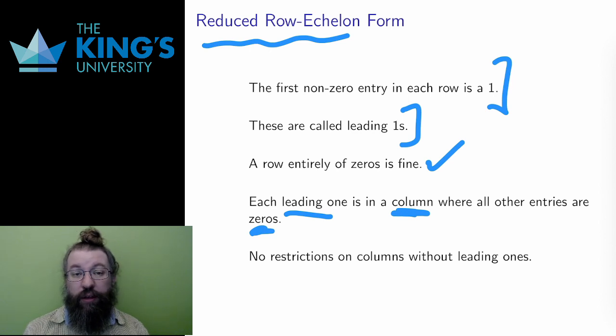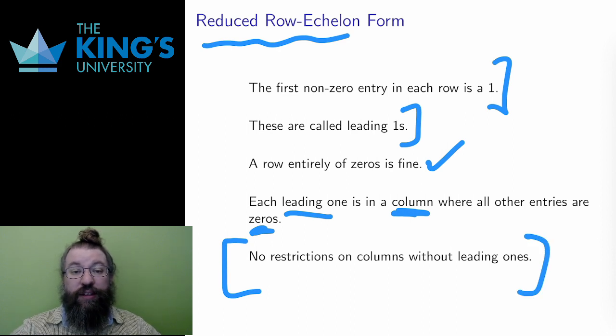Finally, there are no other rules about columns that don't have a leading 1. These columns can contain any numbers, as long as they don't contradict the first rule that, in any row, there are only 0s before the leading 1. A matrix that is in this form will produce a readable solution.